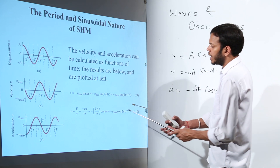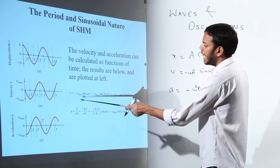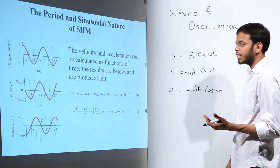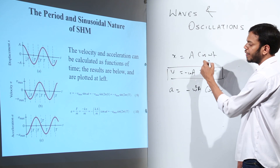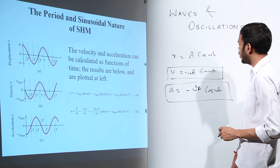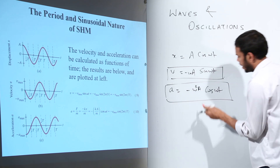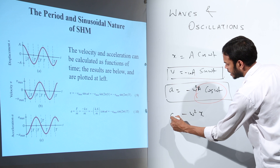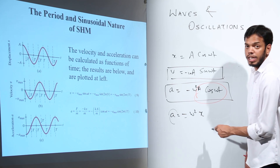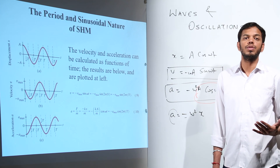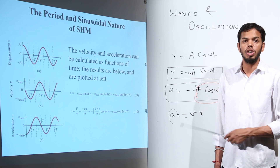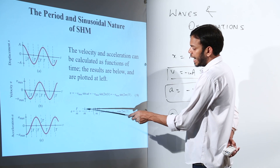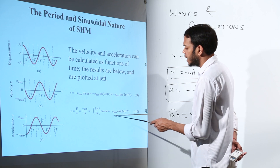If I want acceleration, I differentiate velocity again: differentiating −ωa sin(ωt) gives −ω²a cos(ωt), which is −ω²x. So acceleration is directly proportional to the negative of displacement. This is why it belongs to restoring force, which is simple harmonic in nature — it is opposite to the displacement. So acceleration = −kx/m, confirming the same relationship.